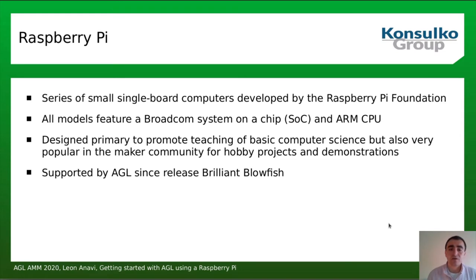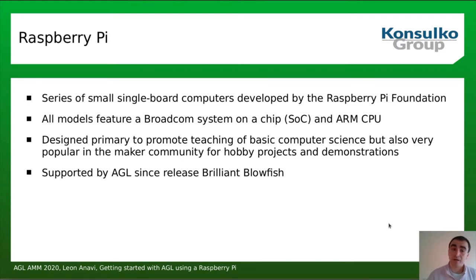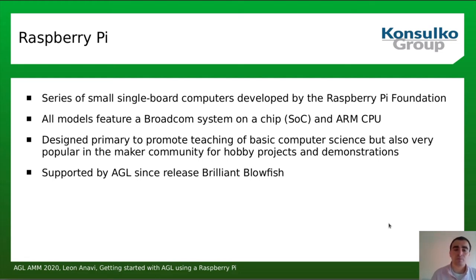Raspberry Pi is a series of small single-board computers developed by the Raspberry Pi Foundation. The project started more than a decade ago in 2009, and the first Raspberry Pi version was released in 2012. All models feature a Broadcom system-on-chip and an ARM CPU. The latest model as of today is Raspberry Pi 4, which is supported by AGL. Although Raspberry Pi was initially designed to promote teaching of basic computer science for children, it became super popular in the maker community for hobby projects and various demonstrations.